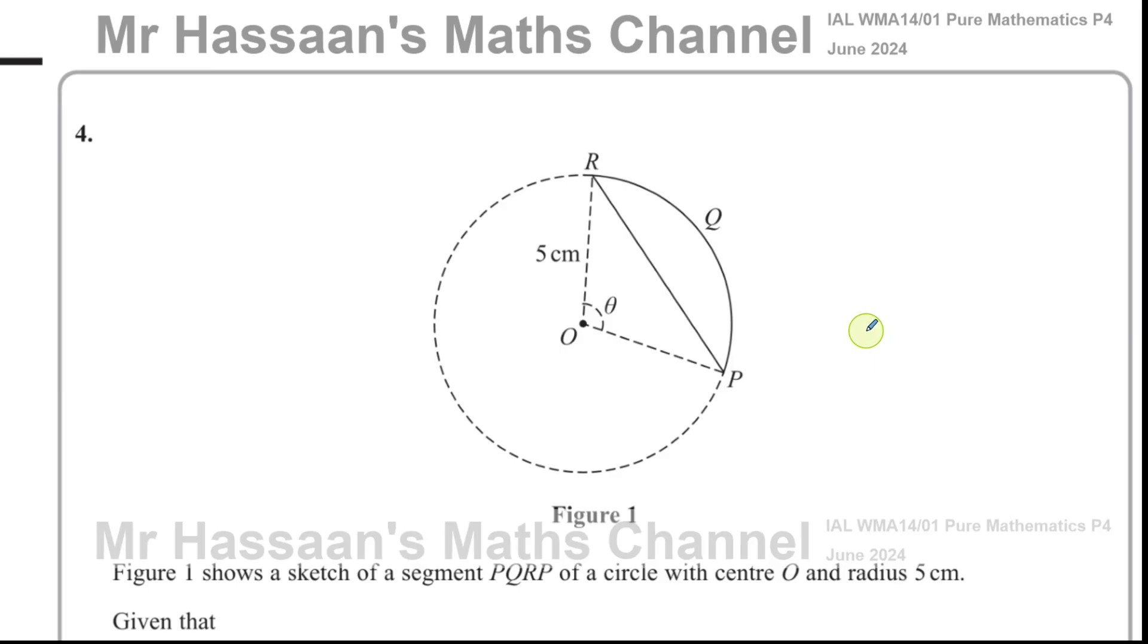This question is all about related rates of change. It involves some of the stuff that we learned in P2, which is to do with area of sectors and segments. I remember some of the students who took this exam were a bit surprised. I think it's from P1 actually, radian measure.